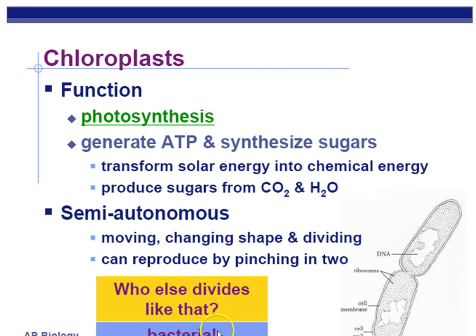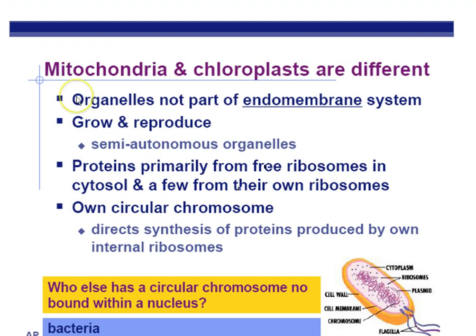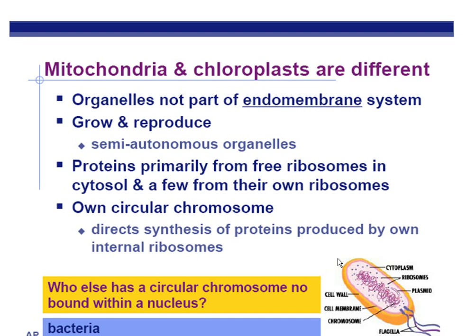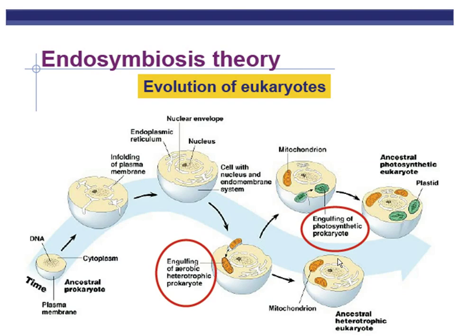What else divides like that? Well, the answer is bacteria. Mitochondria and chloroplasts are not part of the endomembrane system; they grow and reproduce separate from the rest of the cell. They have some of their own proteins from their own free ribosomes, as well as some proteins from the cell's ribosomes. And they have their own circular chromosome, just like bacteria. Don't get endosymbiosis confused with endomembrane — they both have 'endo' in them.